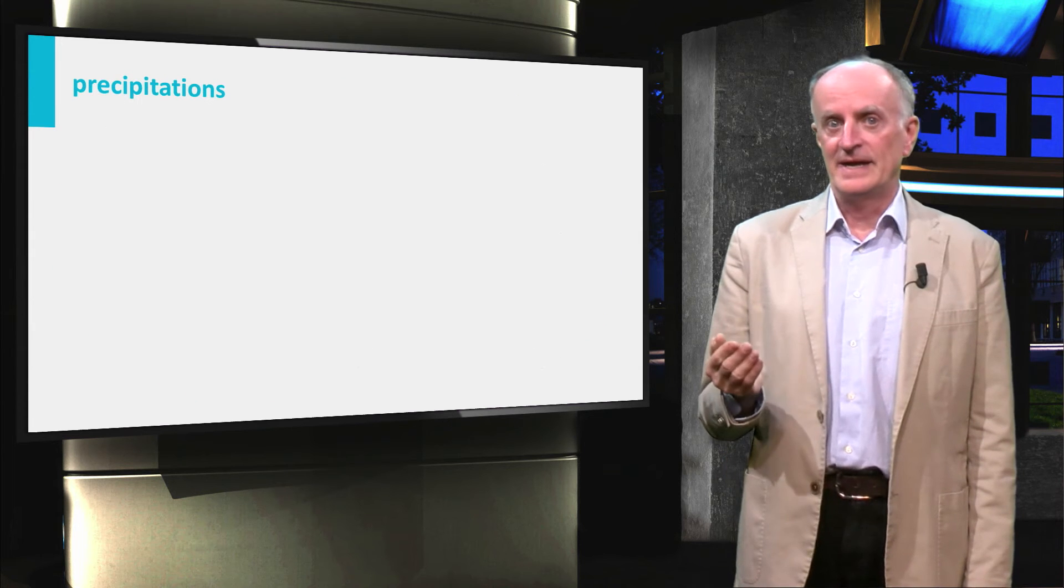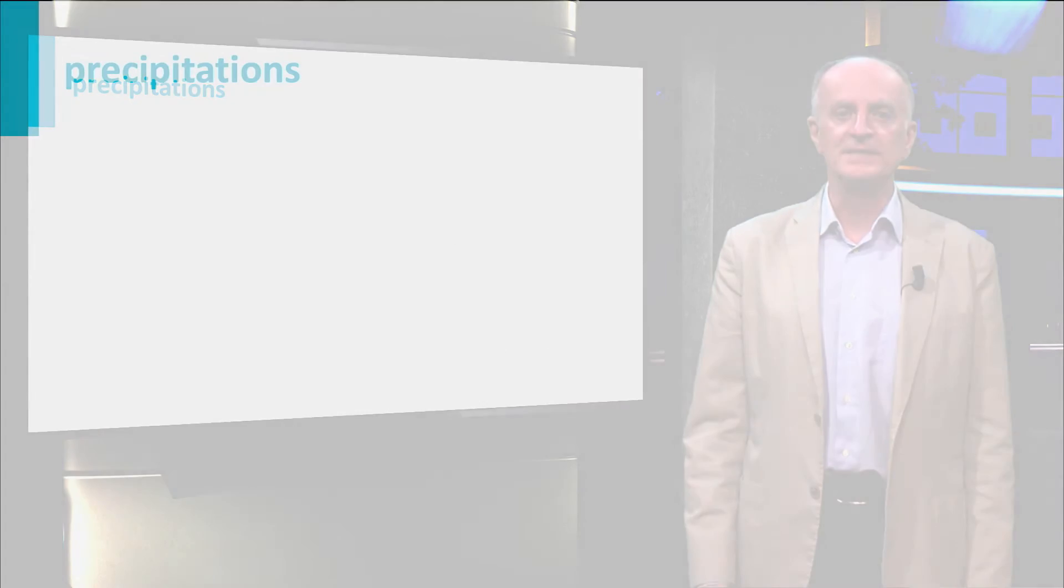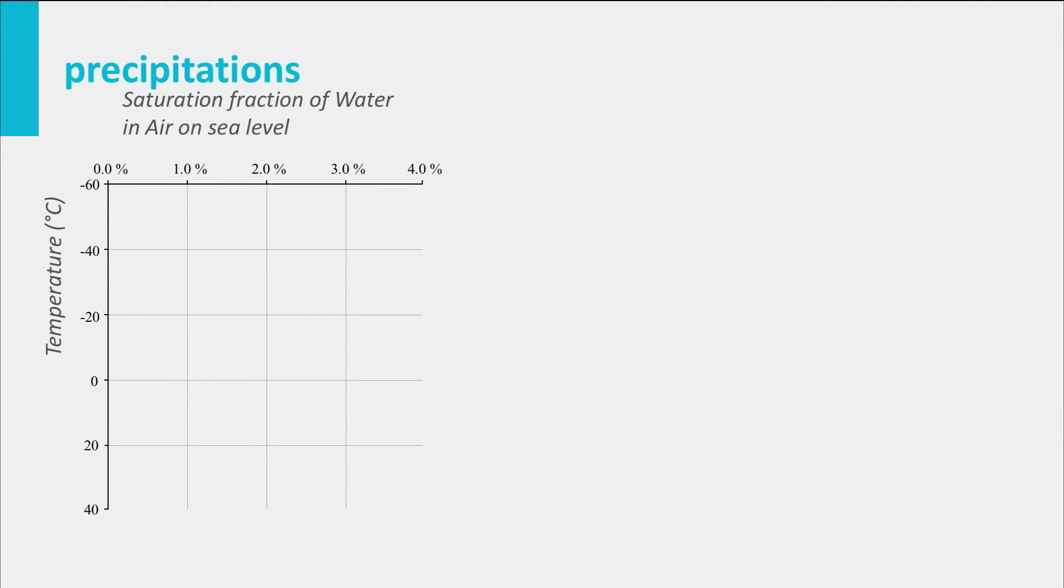Winds are the driving force controlling another fundamental component of climate, namely precipitations. The key observation is that the amount of water which can be dissolved in air is strongly dependent on temperature of the air mass.